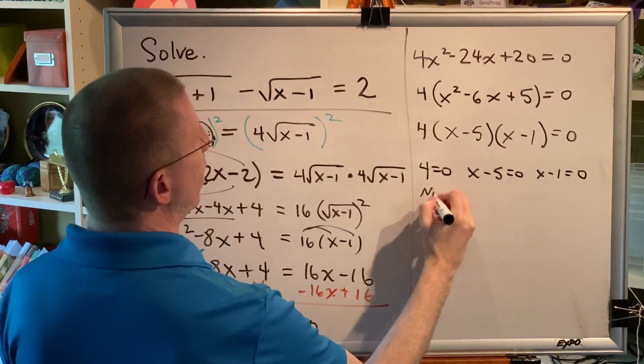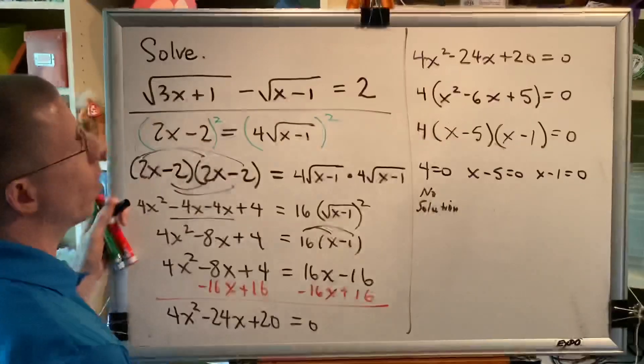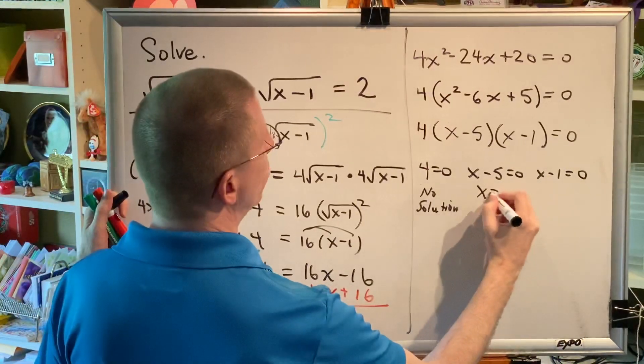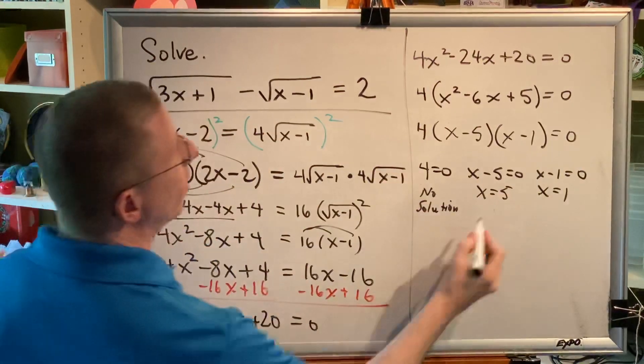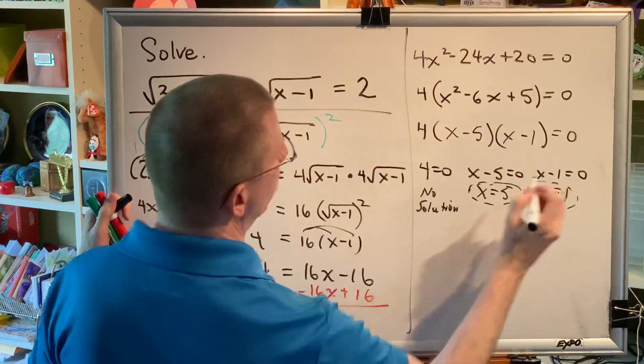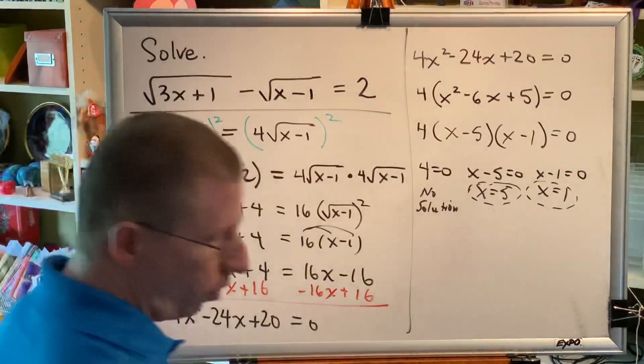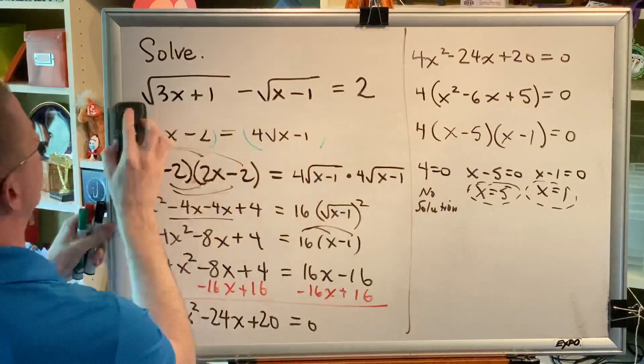We get 4 equals 0, which has no solution. There is no value of x that will make 4 equal to 0. Adding 5 on both sides, we get x equals 5. Adding 1 on both sides, we get x equals 1. These are the two possible solutions to our problem. But we have to check both because either one of them could be an extraneous solution.